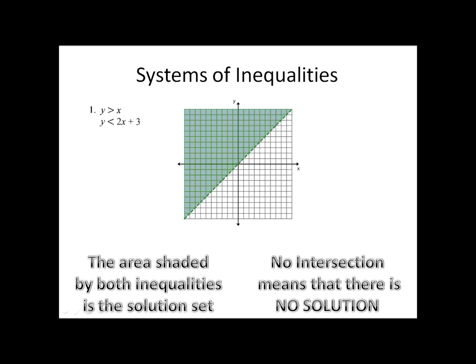Next, I'll graph the second inequality, y is less than 2x plus 3. In purple, I graphed this line, and I did the shading. Once again, it was a dashed line because it's not equal to 2x plus 3, it's simply less than.